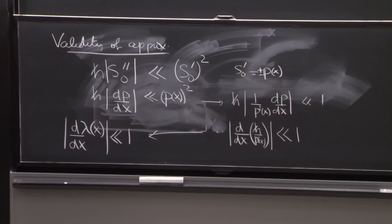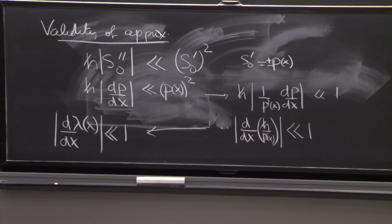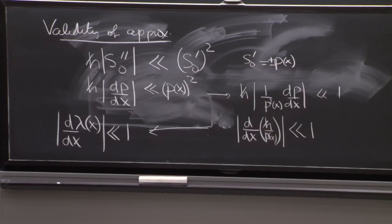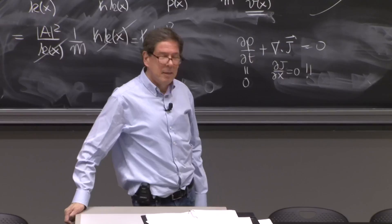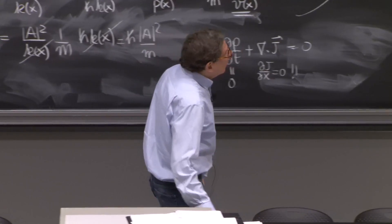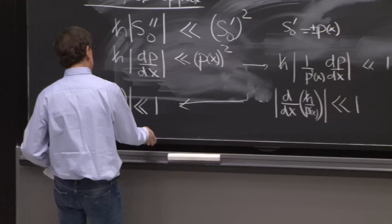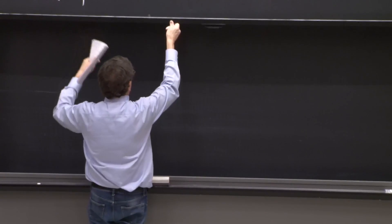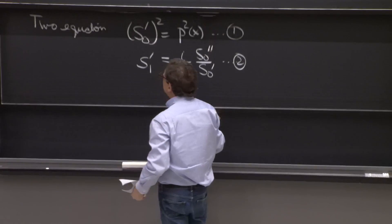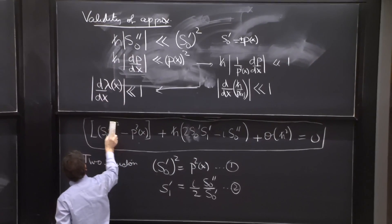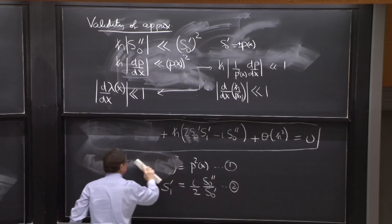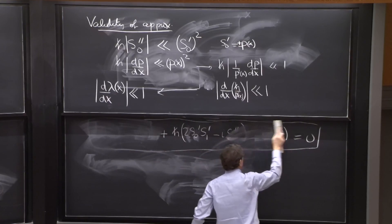This is the local de Broglie wavelength. This says that d/dx of the local de Broglie wavelength must be much smaller than 1 — a nice result. Your local de Broglie wavelength must have a small derivative. This is the physics translation of the semi-classical approximation. h-bar going to 0 is a mathematical device, but this is physical. d(lambda)/dx has the right units: lambda has units of length, x has units of length, so that derivative is dimensionless and should be small compared to 1.